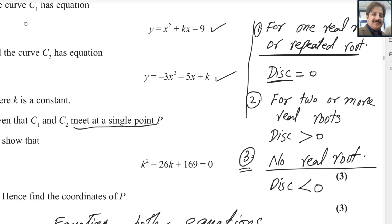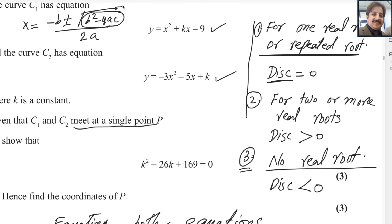If you remember the quadratic formula, it is x equals minus b plus or minus the square root of b squared minus 4ac, all divided by 2a. The expression b squared minus 4ac is the discriminant. If it equals 0, you get one real root. If it is greater than 0, you get two or more real roots — mostly exactly two for a quadratic. And if b squared minus 4ac is less than 0, you get a negative under the square root, so there are no real roots.